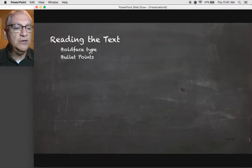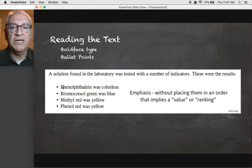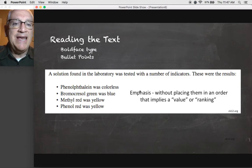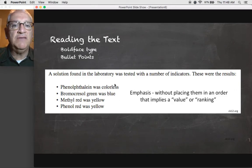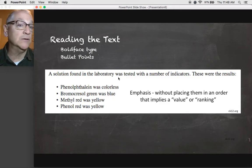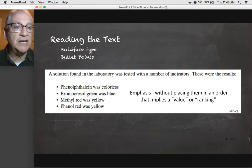Now another thing you can do is you can find things with bullet points. Now bullet points are really helpful. They tell you a list of things. But here's the critical aspect of bullet points. They emphasize these things but without placing them in an order that implies a value or ranking. So it's not like phenolphthalein is more important than phenol red. And that bromocresol green is more important than methyl red. It's just the fact that these four things have been set apart in this particular list.